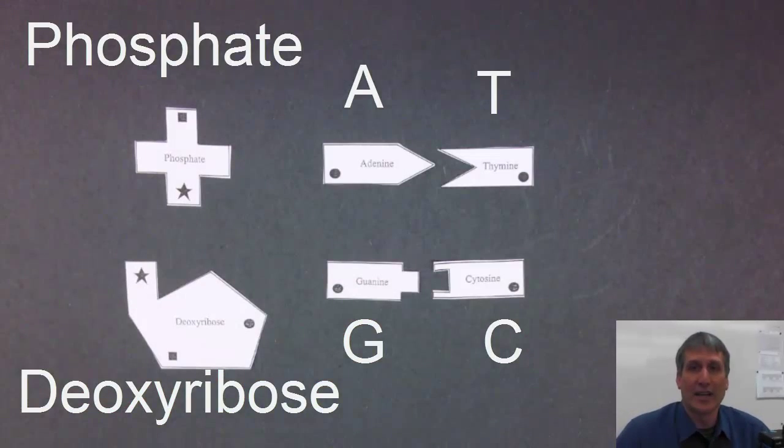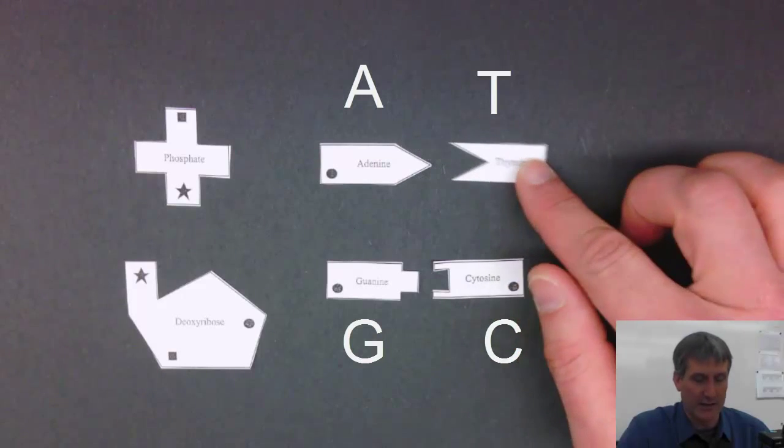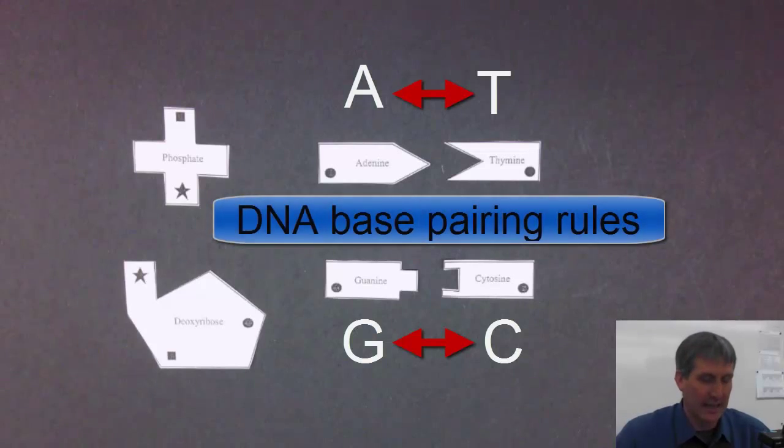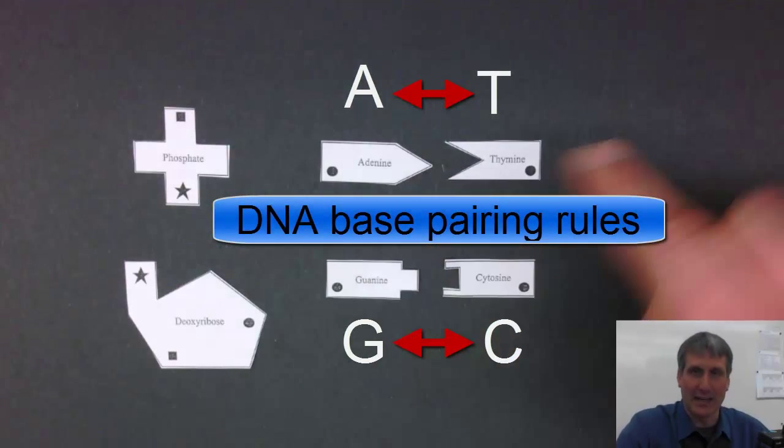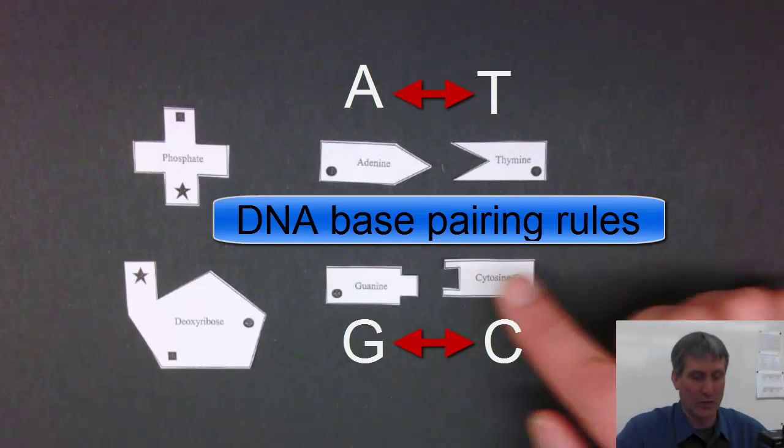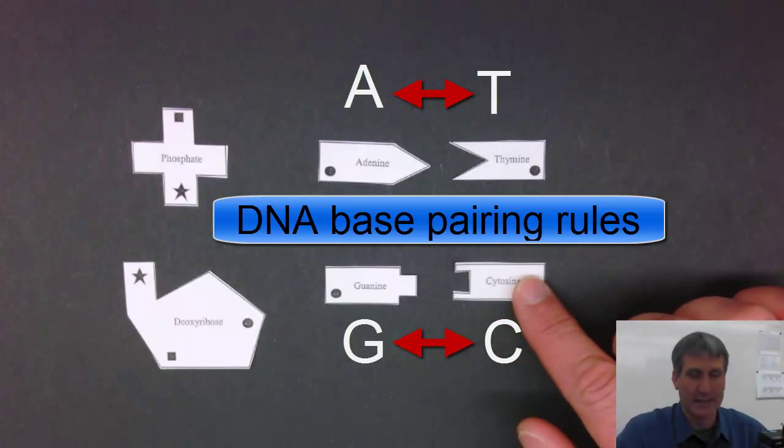As you can notice, the bases are cut to fit each other. That's because when we get into this structure, we'll see that the base adenine always pairs with the base thymine, and the base guanine always pairs with the base cytosine.